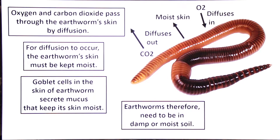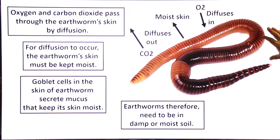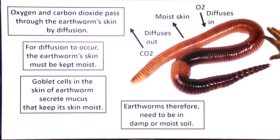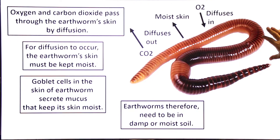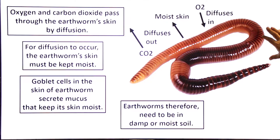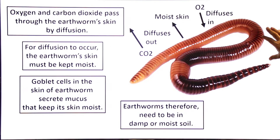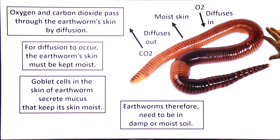Earthworm ka jo respiratory surface hota hai, voh moist hota hai. Aur us mein help karta hai goblet cells jo ke mucus release karta hai, aur mucus earthworm ki skin ko hamesha moist rakhta hai.